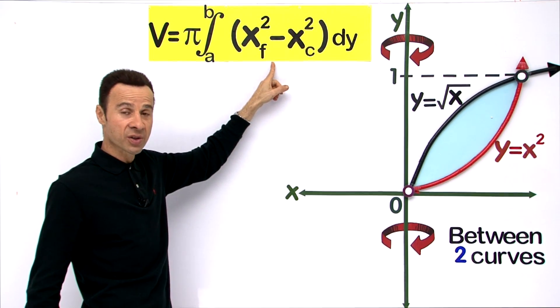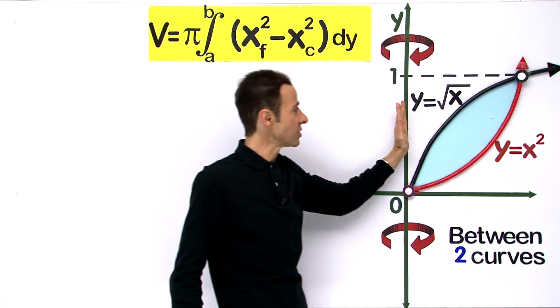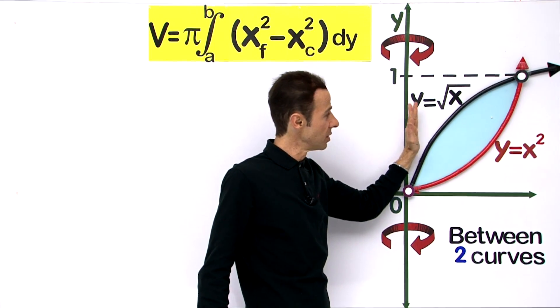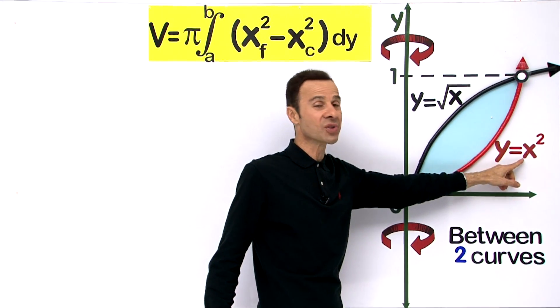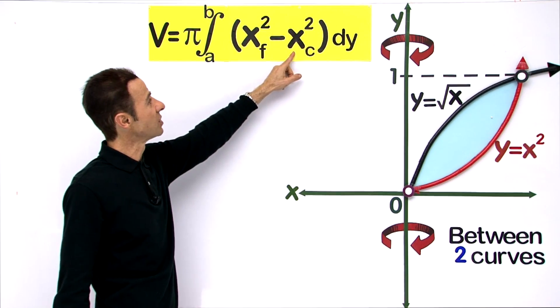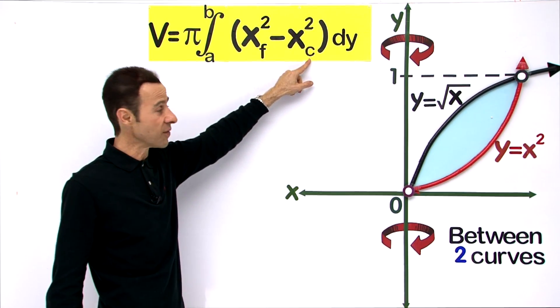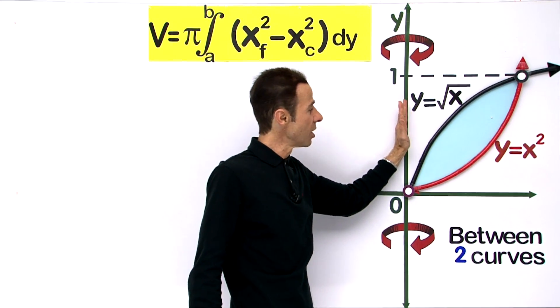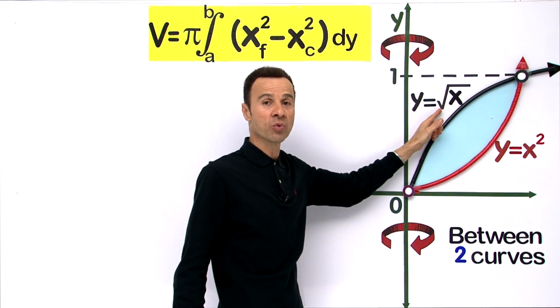Which curve is furthest from the y-axis? The furthest is the parabola y equals x squared. And c stands for the closest - the closest is y equals the square root of x.